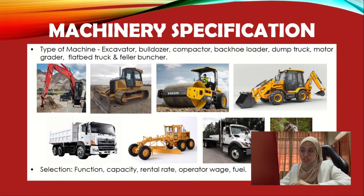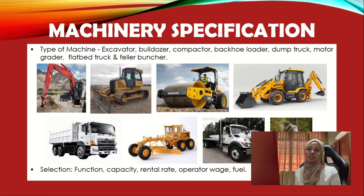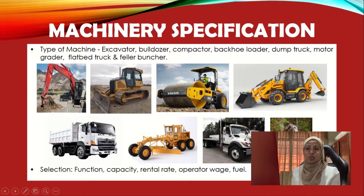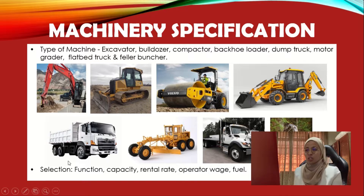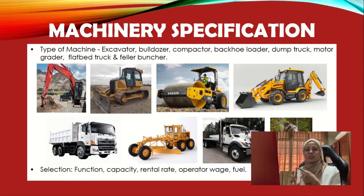For the machinery specification, several types of machines can be used for construction, such as excavator, bulldozer, compactor, backhoe loader, dump truck, motor grader, flatbed truck, and feller buncher. The selection of machinery is based on function, capacity, rental rate, operator wage, and fuel.